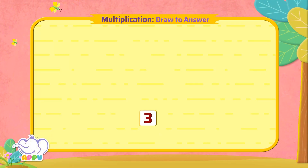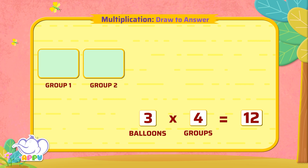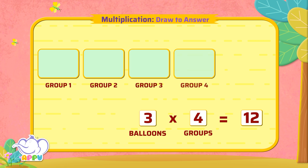Draw balloons to show 3 times 4 equals 12. To show 3 times 4 is 12, we have to draw 3 balloons in 4 groups. So let's do it. First, let's make 4 groups. Now, draw 3 balloons in each group.